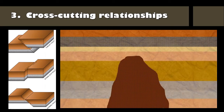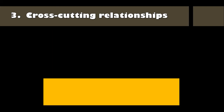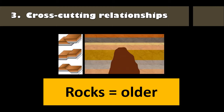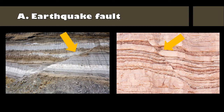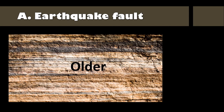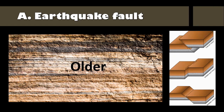Sometimes rock layers are cut by other features, like earthquake faults or intrusions of magma. The principle of cross-cutting relationships states that, because the rock layers were there first, they are older than any features that were produced by later events. Take an earthquake fault, for example. Because the layers were there before the earthquake, they are considered to be older. The fault is described as younger or more recent.